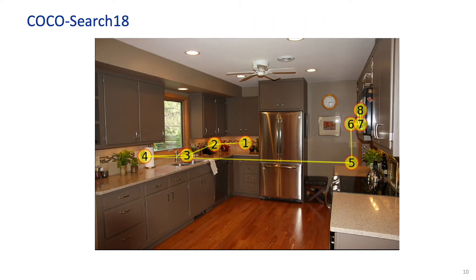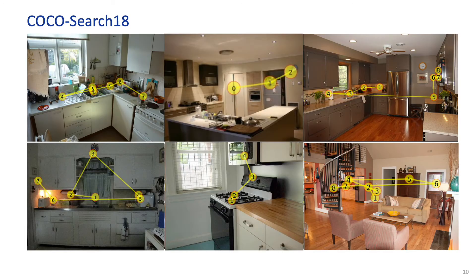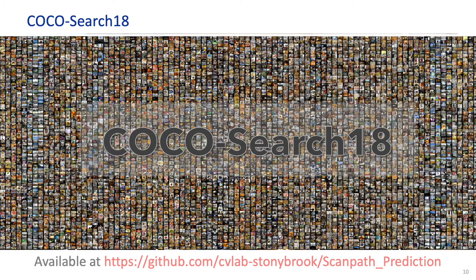Here we show some scan path examples from our dataset. We call our dataset COCO Search 18, and it is now available for download at this link.